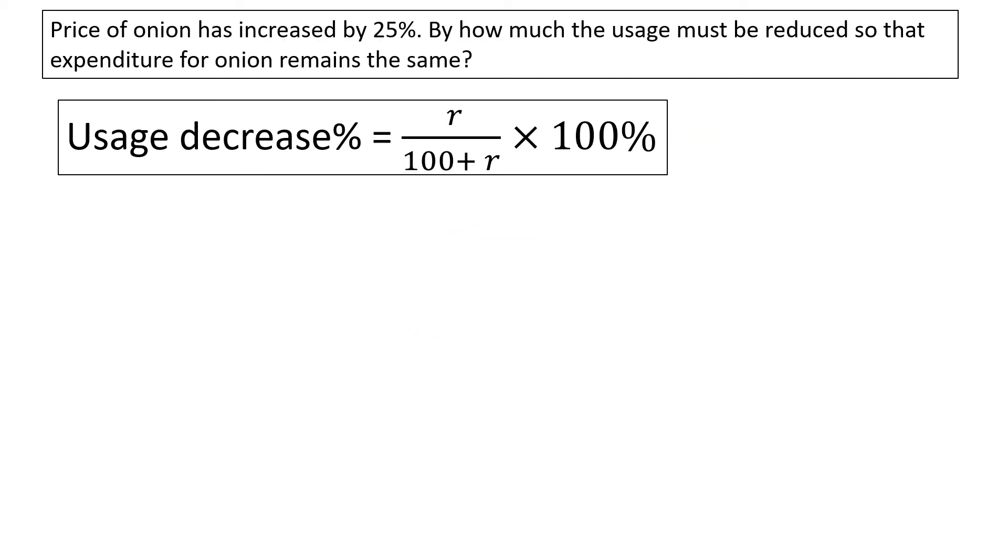Price of onion has increased by 25 percent. By how much the usage must be reduced so that the expenditure for onion remains the same?